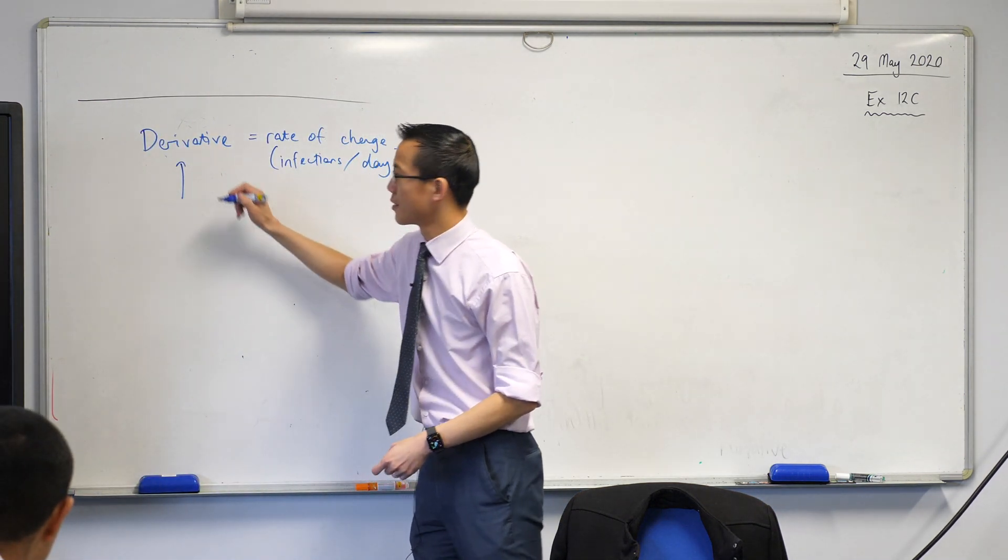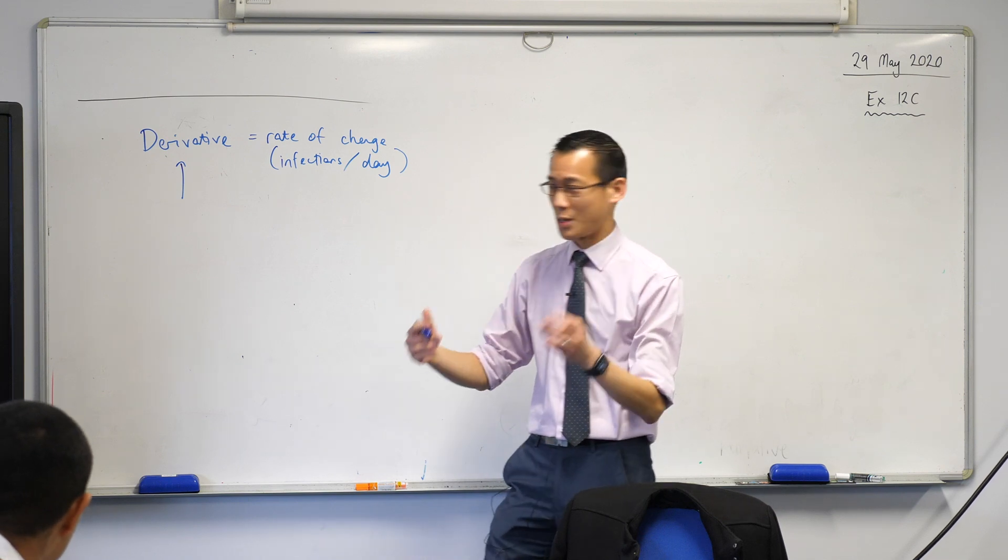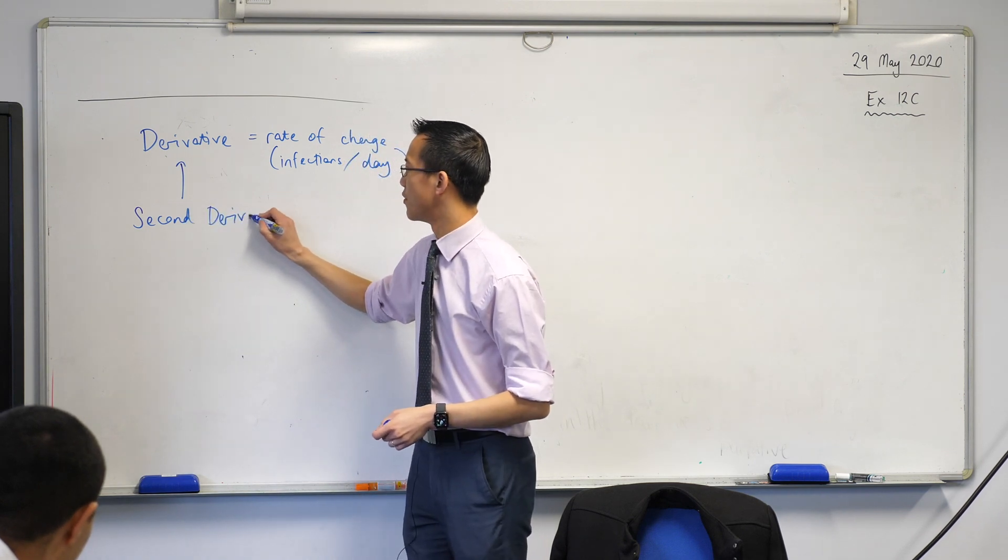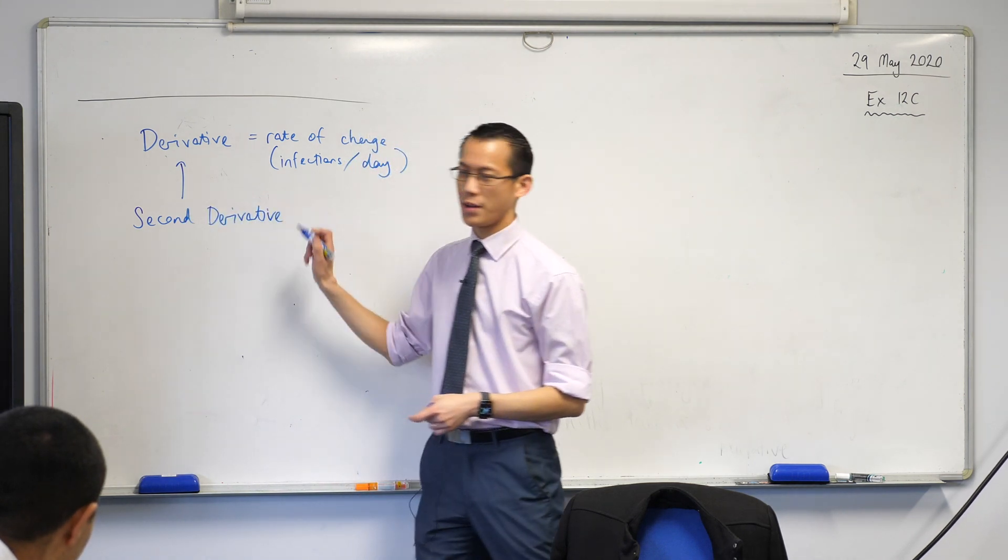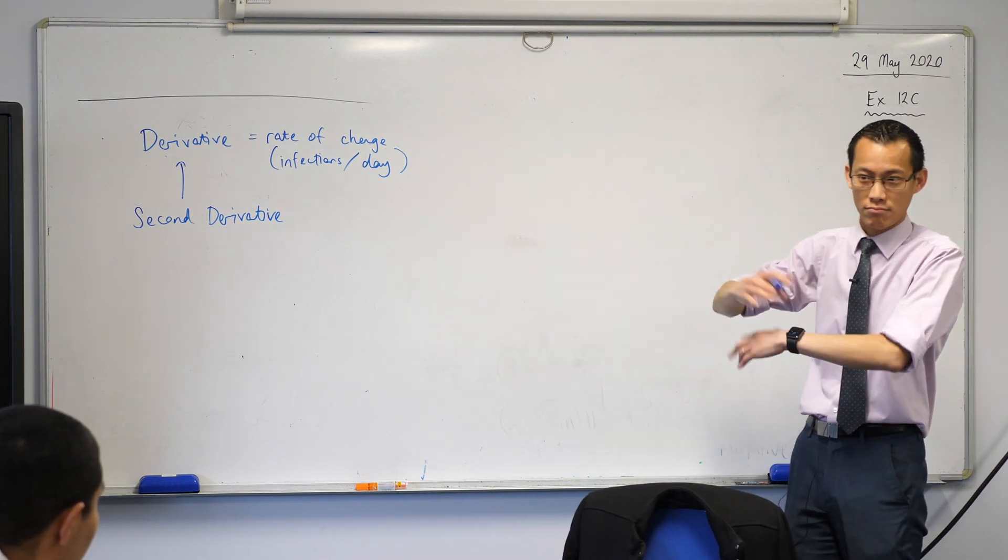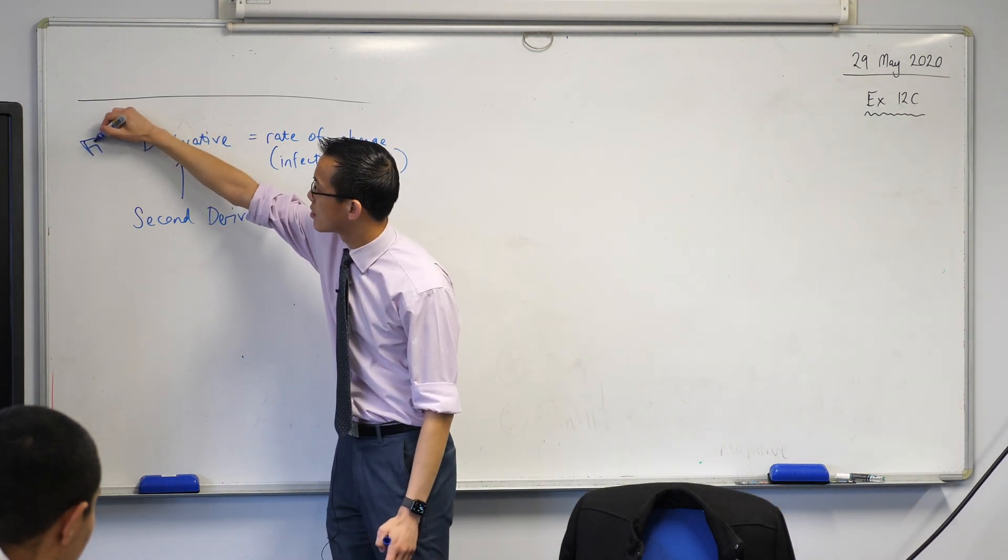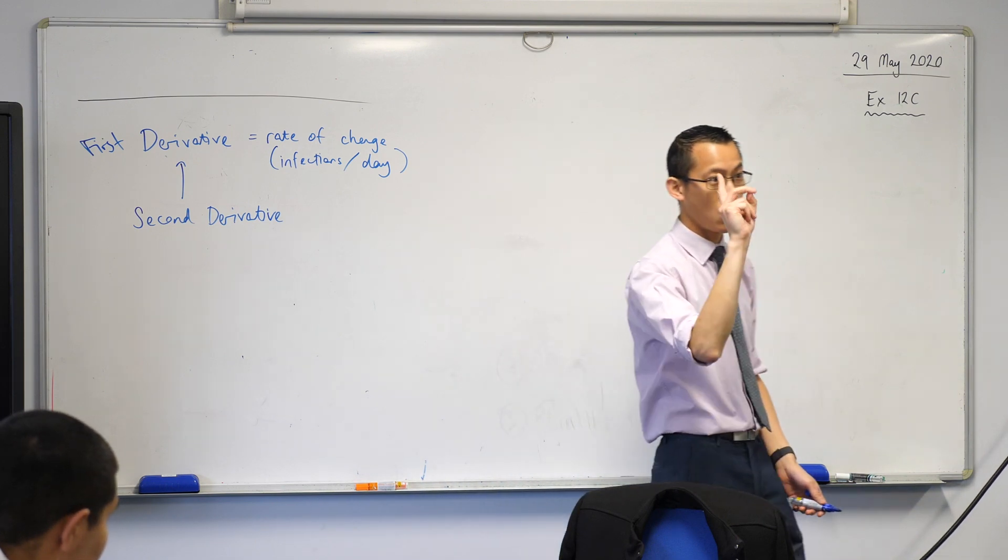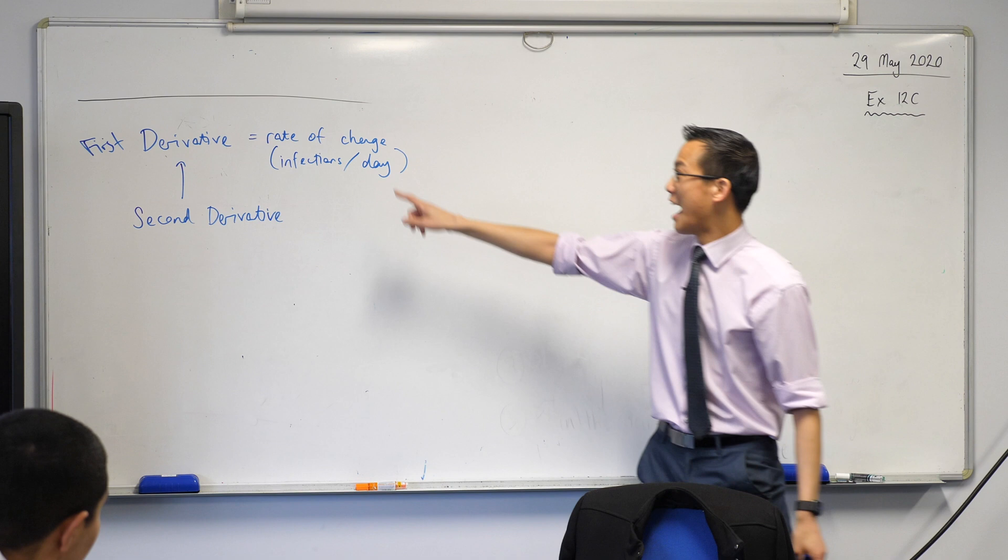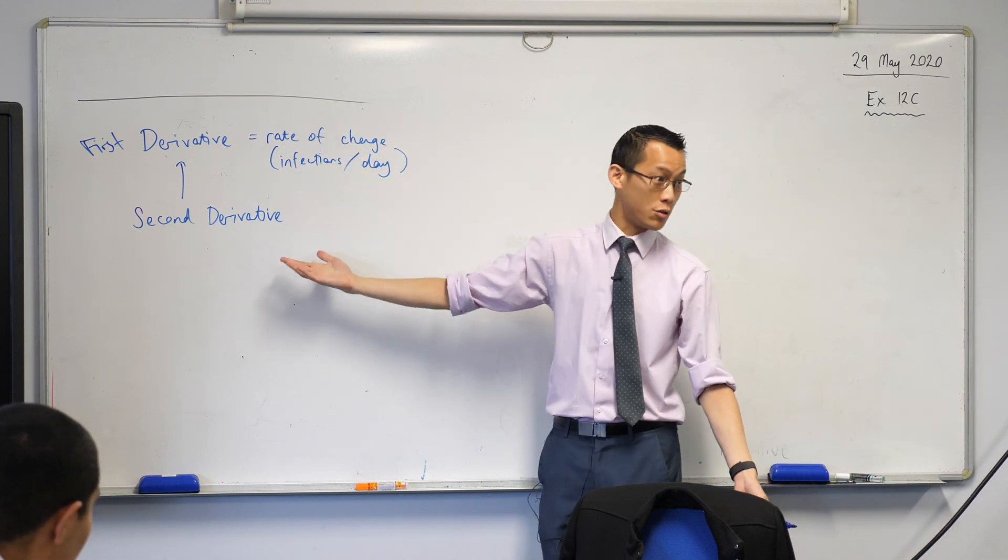So what I'm looking for is the derivative of the derivative. That's a bit long and awkward to say. So instead what I call this is the second derivative. We call the derivative the first derivative, because what happens when you differentiate once. But if you want to know something about how that thing's changing, how the rate of change is changing, then you have to differentiate a second time, we call it the second derivative.